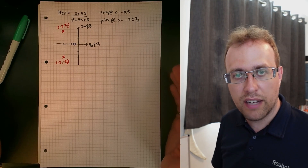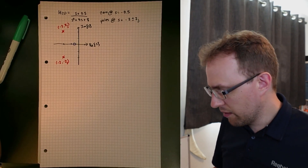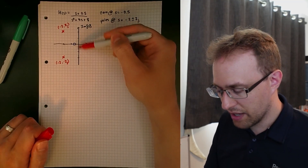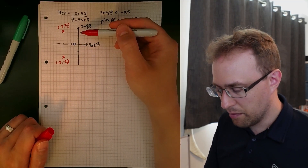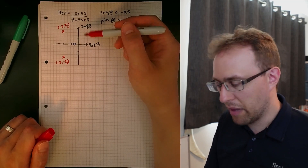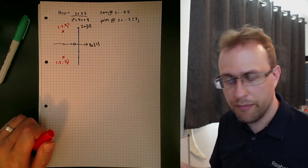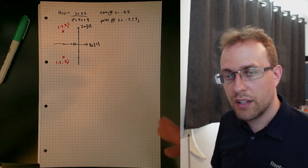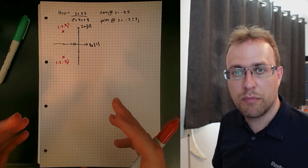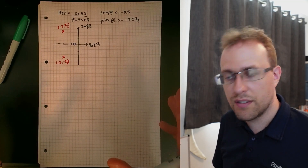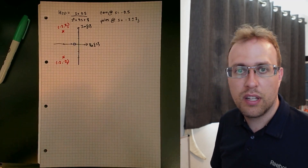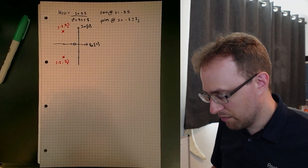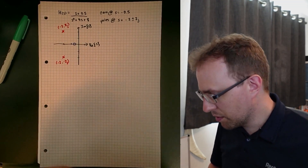We'll start with finding the magnitude of this transfer function. For the frequency response, this is solved along the imaginary s-axis, so we consider different values of frequency omega — basically s = jω. In principle you could plot any arbitrarily large number of points, but since we're doing this by hand with the geometric approach, I'm just going to pick three different test frequencies.